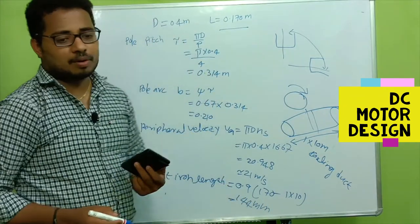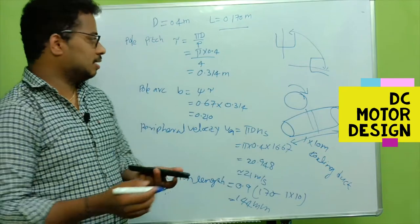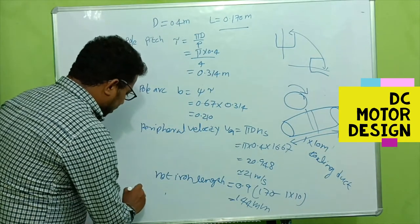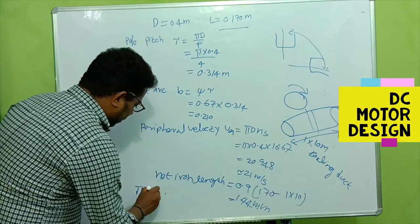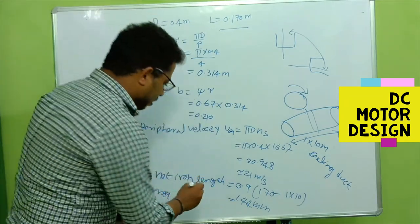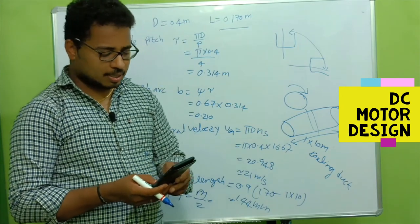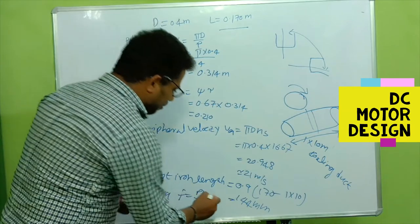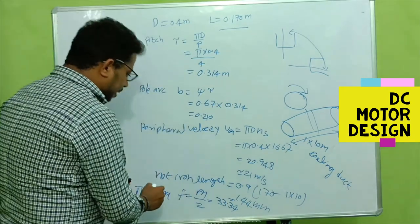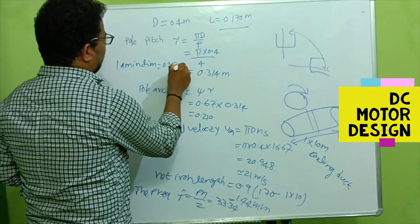Similarly, the frequency of reversal. In a DC motor, even though this is DC, the voltages operating inside are alternating in nature. The frequency of reversal, denoted as f, is P times n divided by 2. P is 4, n is 16.67 rotations per second, divided by 2, so we get 33.34. That's the frequency for us. And the lamination thickness we used for this machine is 0.35 mm.